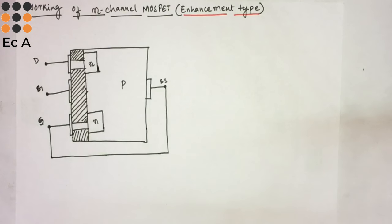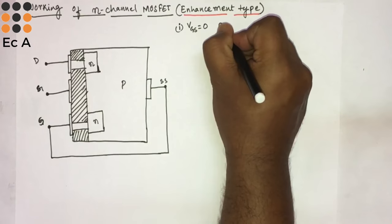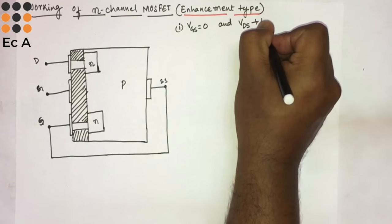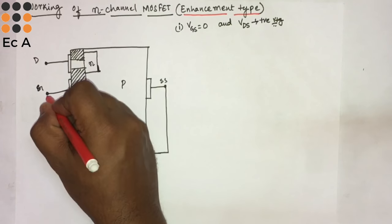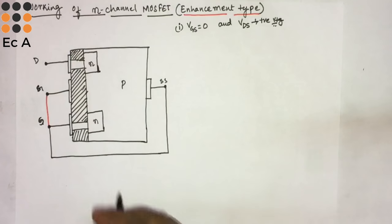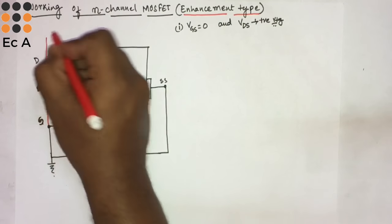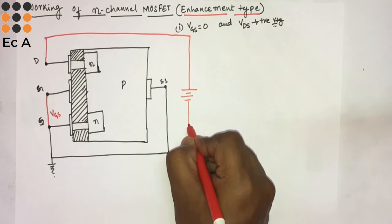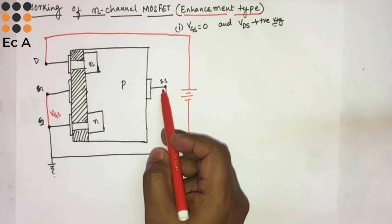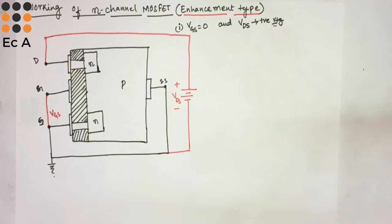Now let us connect voltage between drain and source, and gate and source. For the first condition, we will make VGS equal to zero — just connect a wire to source and make this as ground. We will connect VDS as some positive voltage, connected positive to drain and negative to source. The substrate region is internally connected.